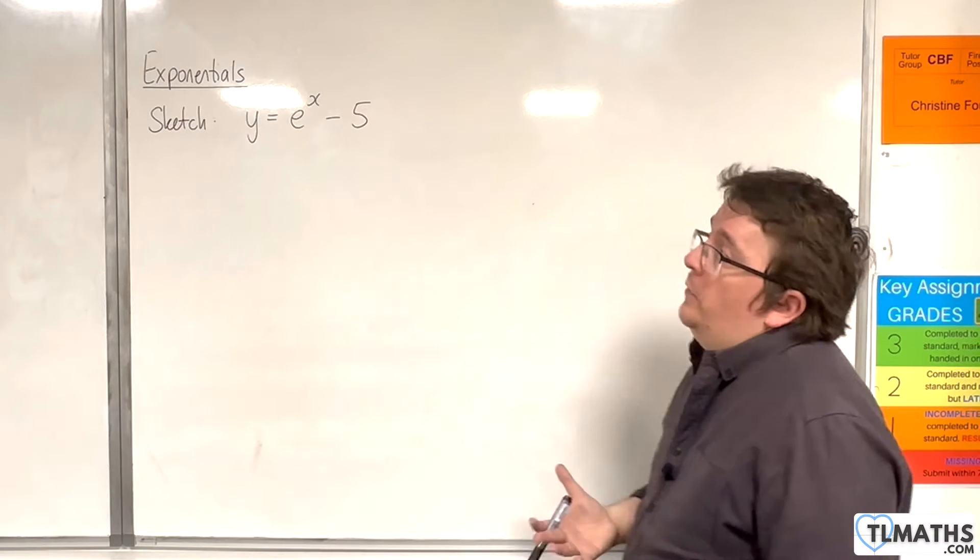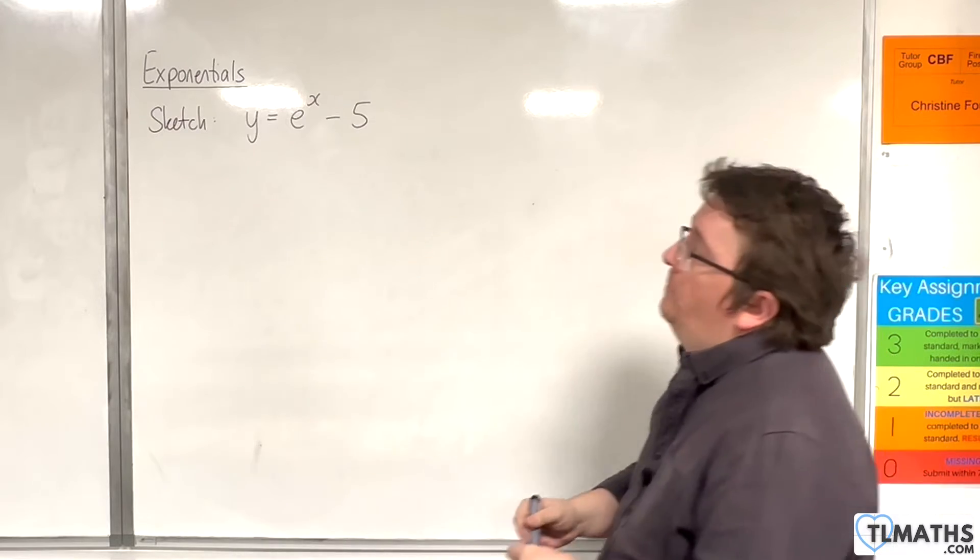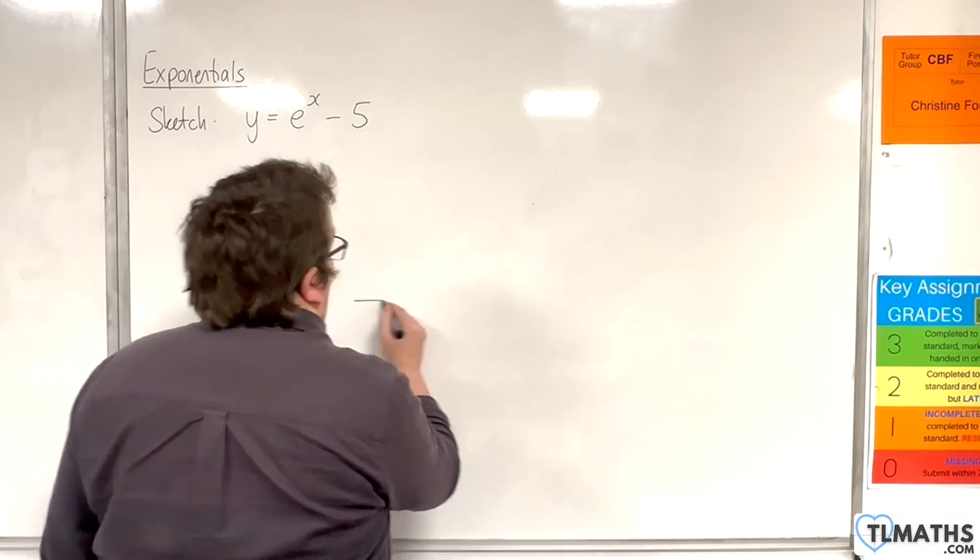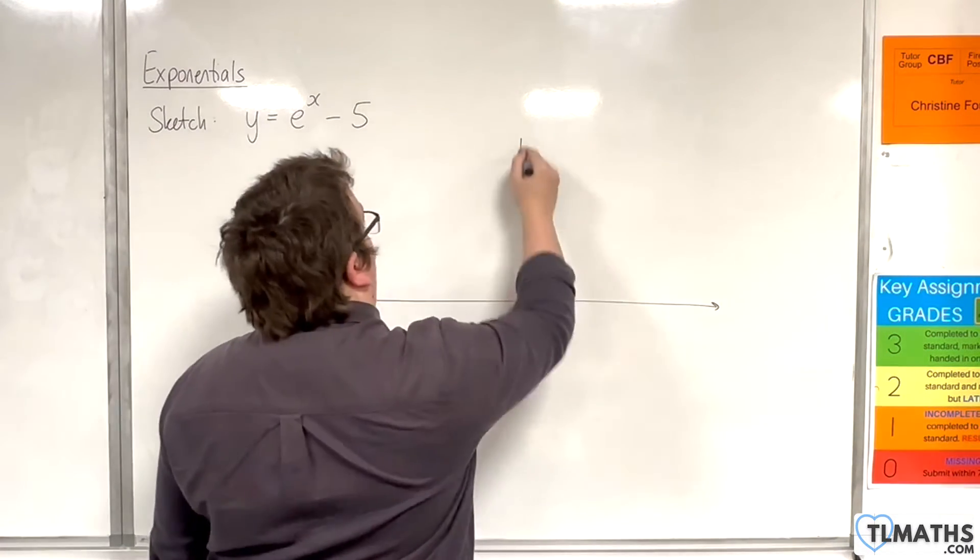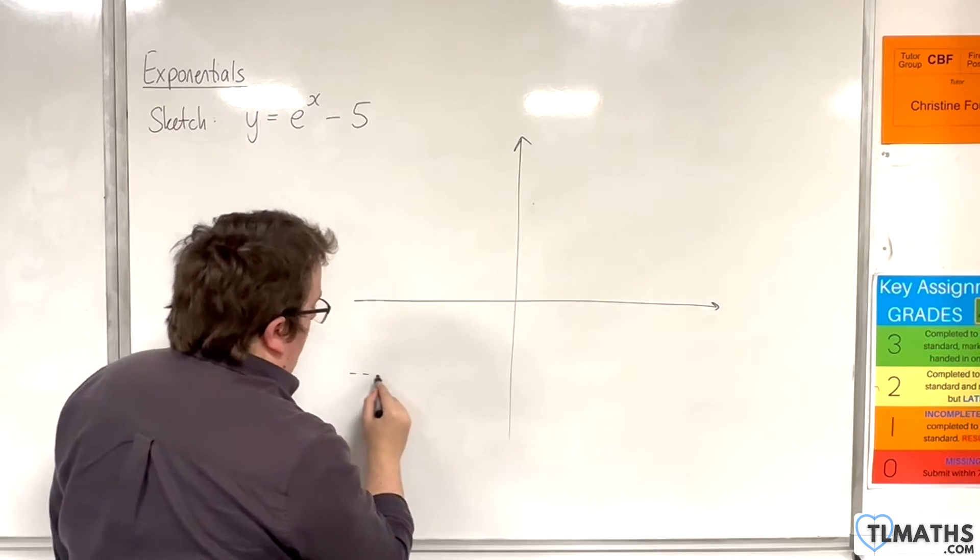So in this video I want to sketch y equals e to the x take away 5. Our horizontal asymptote this time will be at y equals minus 5, so that's down here.